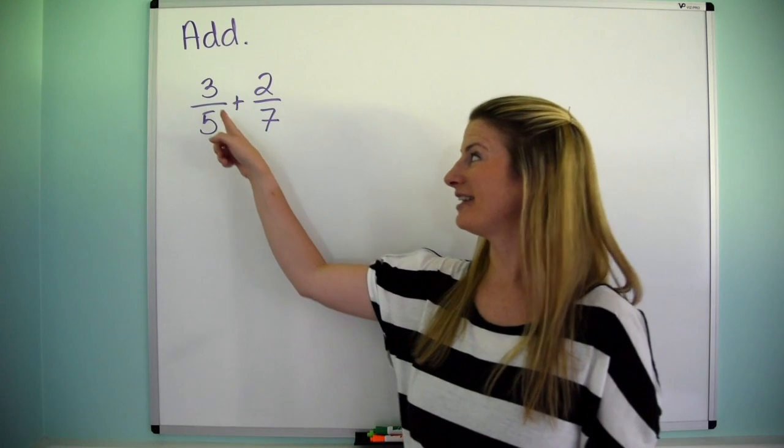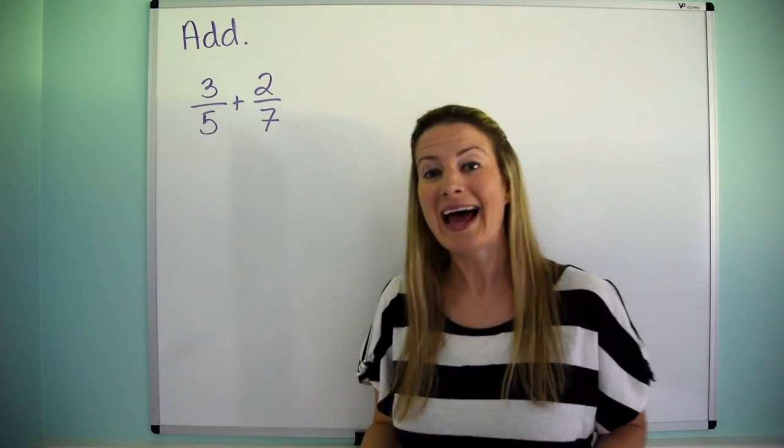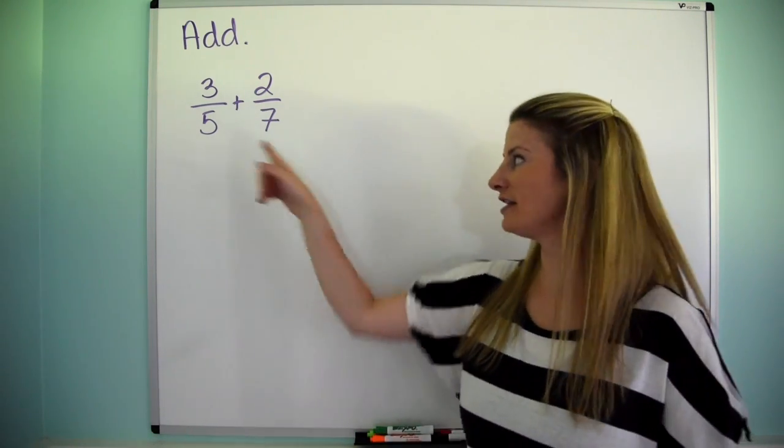Let's try this problem right here. What is 3 fifths plus 2 sevenths? Now remember, you can't add fractions unless they have the same denominator, and these two do not.